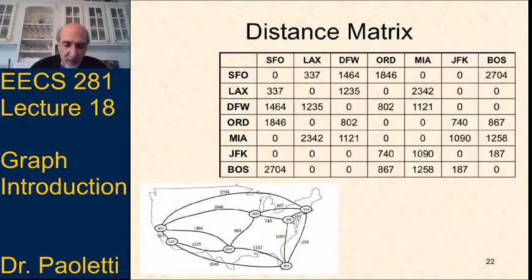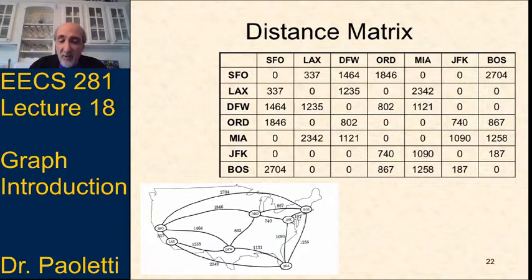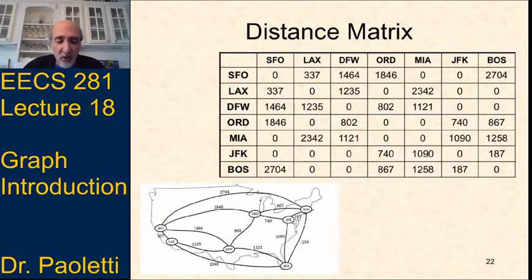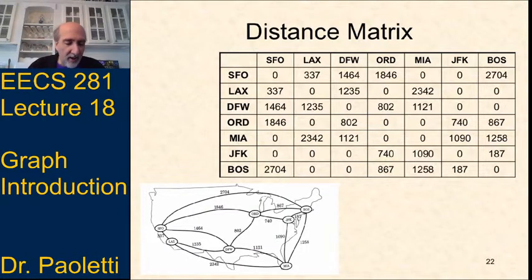If we put actual distances into this distance matrix, zeros would now mean 'no connection' rather than 'zero cost,' which would be confusing for minimization algorithms. A better alternative is to use infinity instead of zero for missing edges — we'll look at that next.